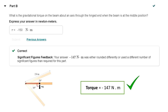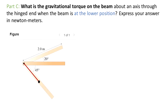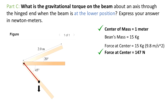For part C: what is the gravitational torque on the beam about an axis through the hinged end when the beam is at its lower position? Express your answer in Nm. The mass is the same, 15 kg. The center of mass is still 1 meter from the hinged end, and the force produced by gravity on the center of mass is the same, 147 N. What's different is the angle between the radius and the force of gravity.